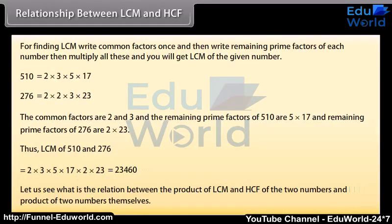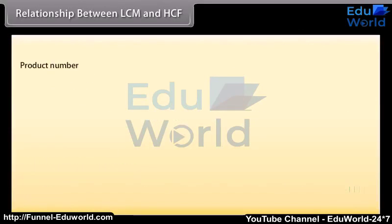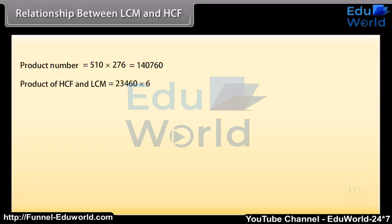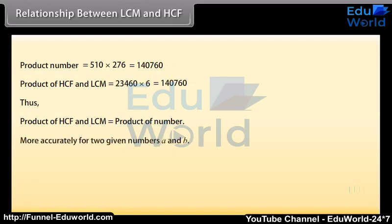Let us see the relationship between the product of LCM and HCF of two numbers and the product of the two numbers themselves. Product of numbers = 510 × 276 = 1,40,760. Product of HCF and LCM = 6 × 23,460 = 1,40,760. Thus, for two given numbers A and B: HCF(A,B) × LCM(A,B) = A × B.